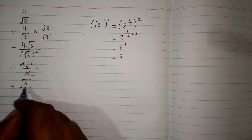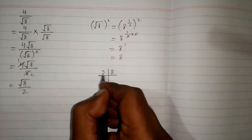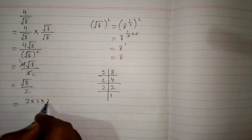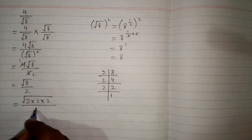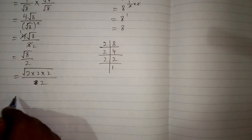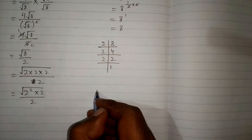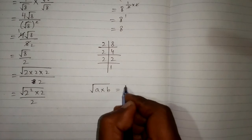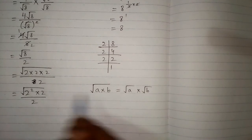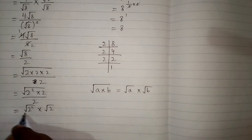We will further simplify square root of 8. We can write 8 as 2 × 2 × 2, so we have square root of 2 × 2 × 2 upon 2. Now, 2 × 2 is 2 squared, so we have square root of 2² × 2 upon 2. Using the rule that square root of a × b equals square root of a × square root of b, this becomes square root of 2² multiplied by square root of 2, upon 2.